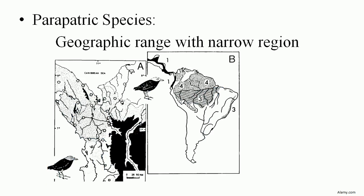The third type is parapatric species. Parapatric species are those organisms sorted by a narrow geographical range. They sort from one group to another, from one area to another locality, and ultimately develop their own species.